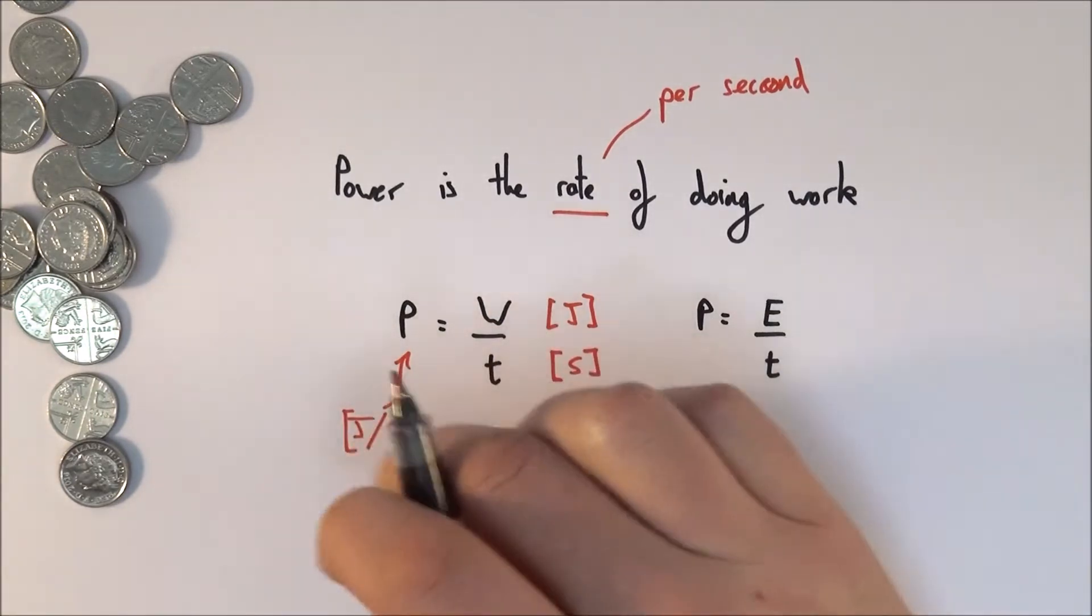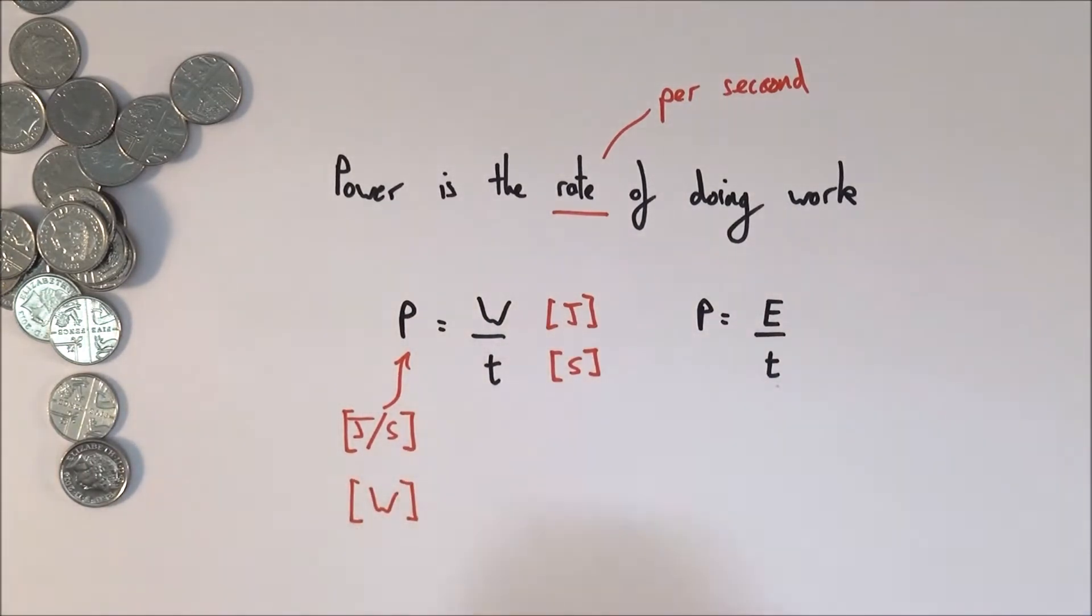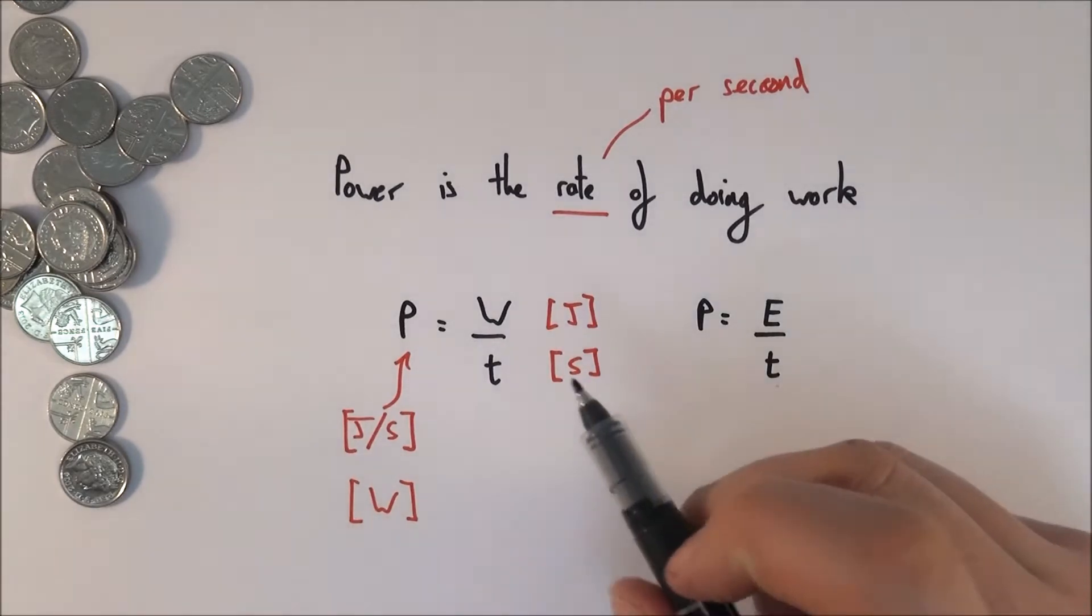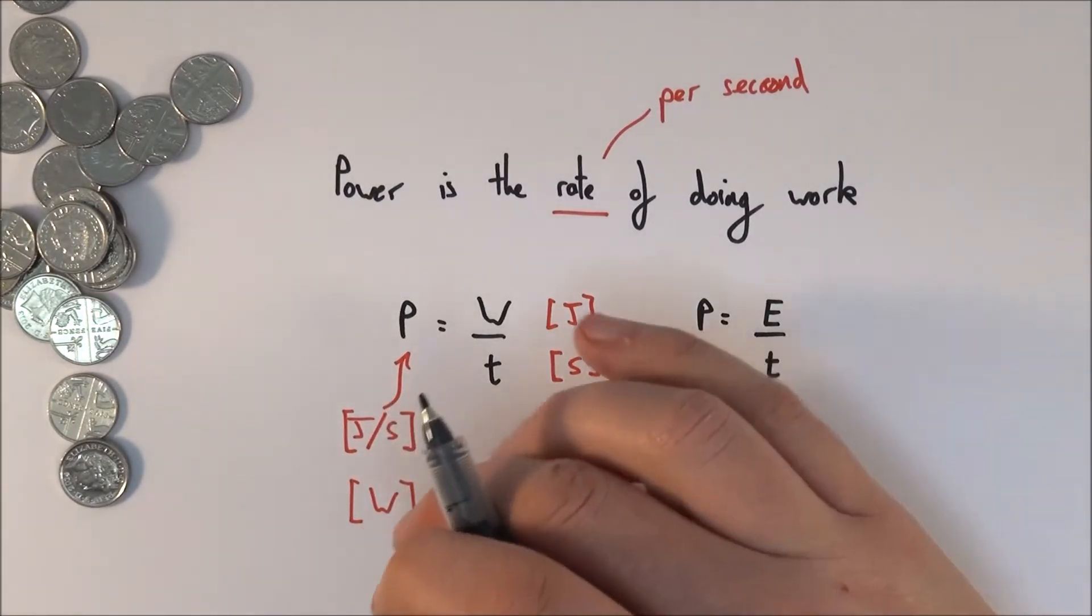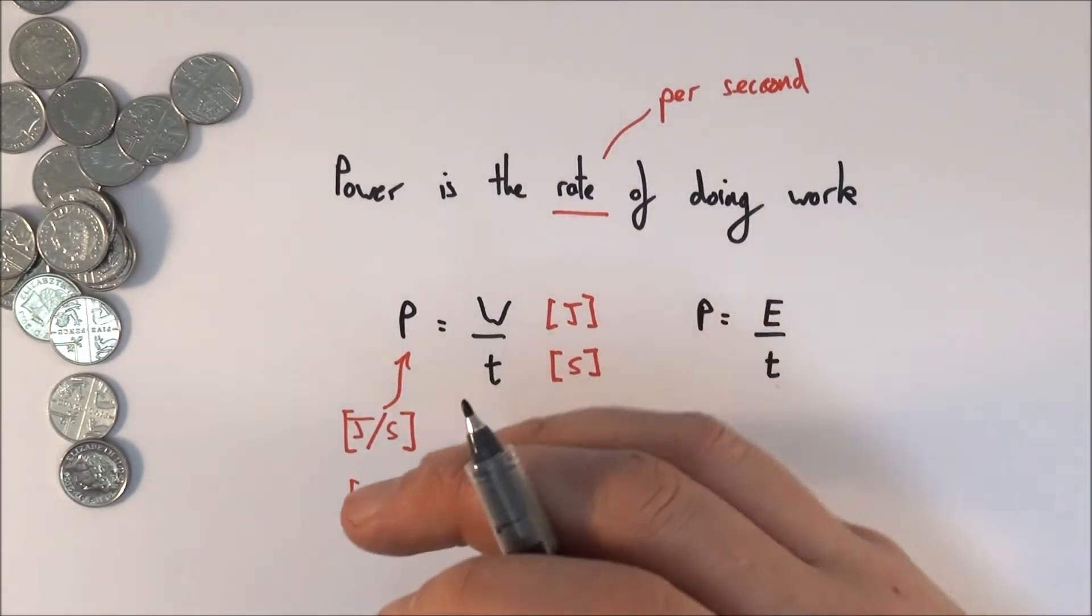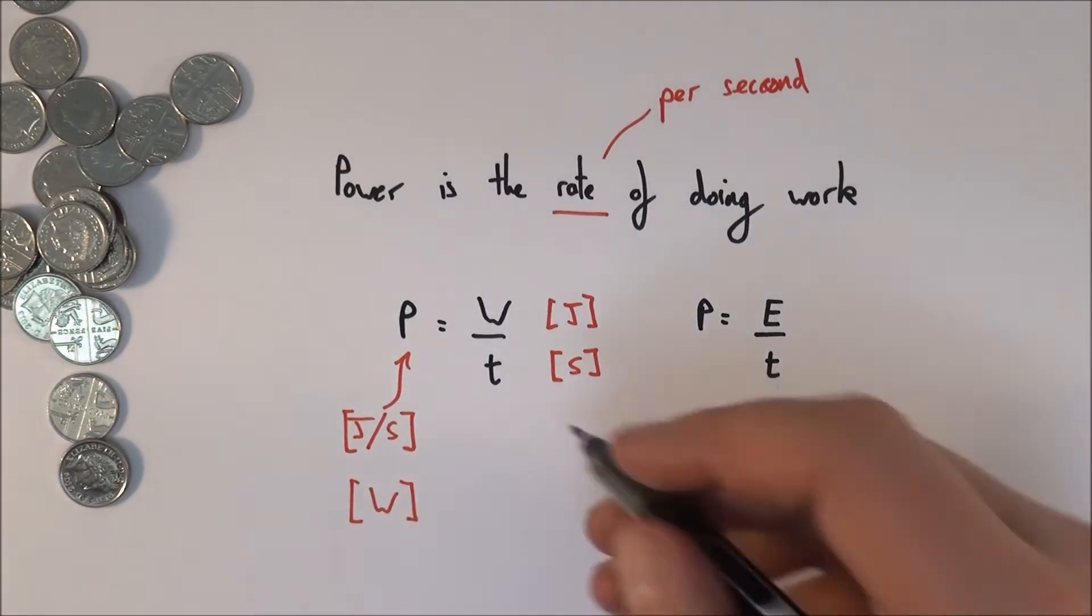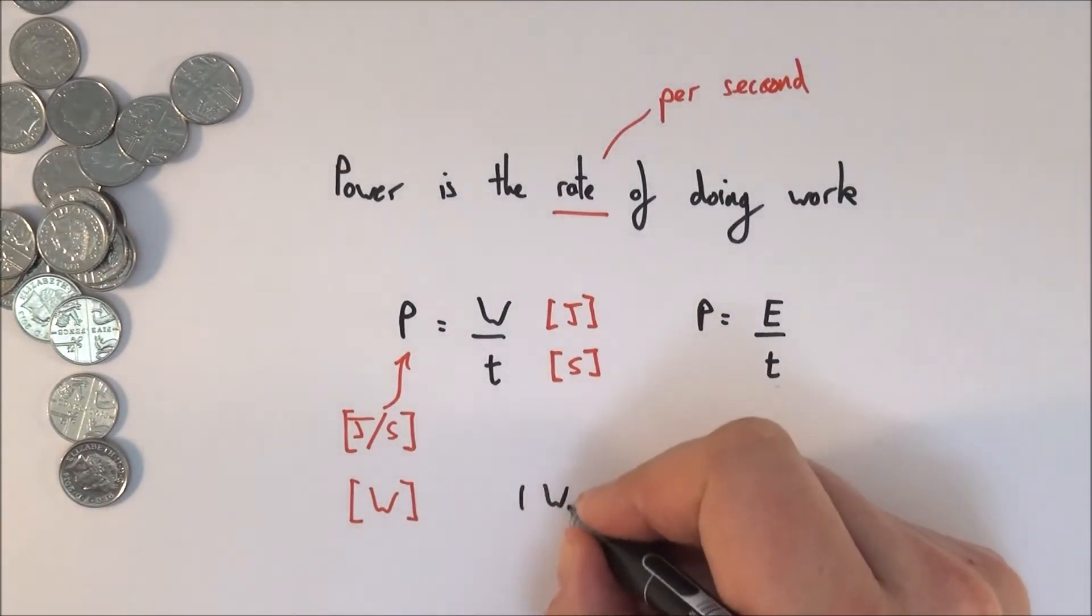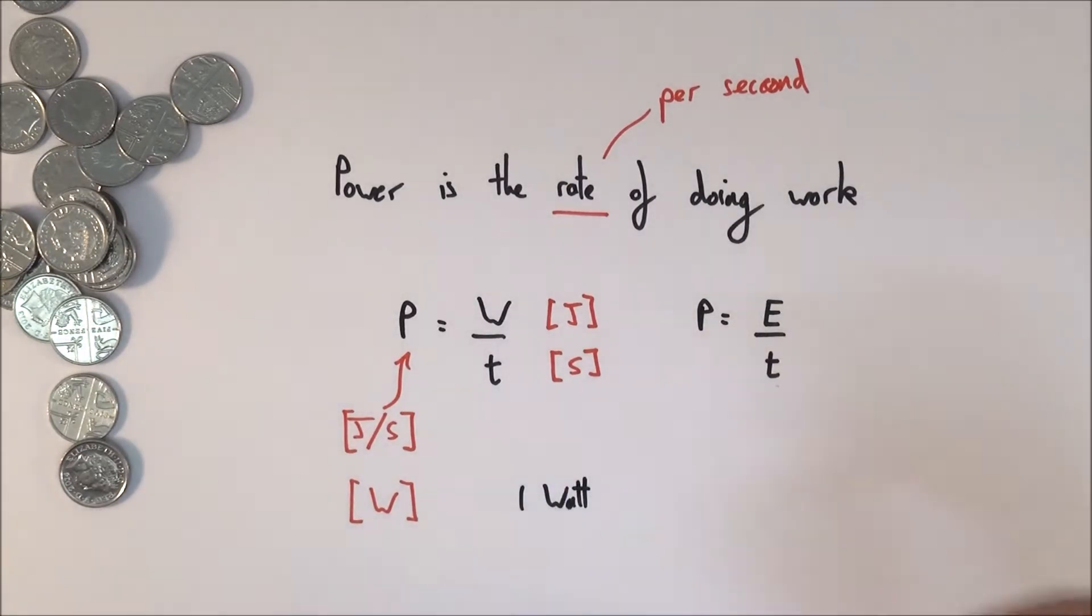Actually, because that's getting a bit long-winded and we use power all the time, it also has a unit of watts, where capital W stands for watt. This is named after a Scottish inventor called James Watt and the work he did - he was one of the first people to really get things like steam engines working. One watt is defined as when one joule is transferred per second.